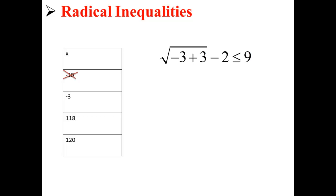Next, we test negative 3. This gives us √0 - 2 ≤ 9, so negative 2 is less than or equal to 9. This is a valid solution, so negative 3 works as an x value.